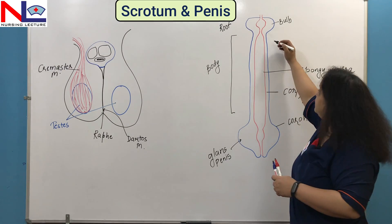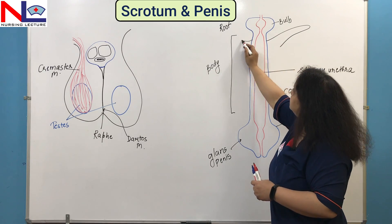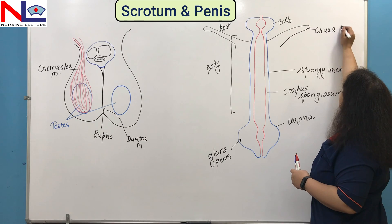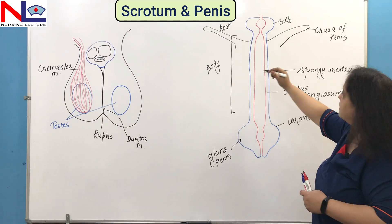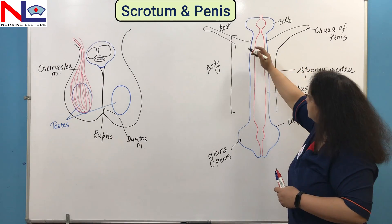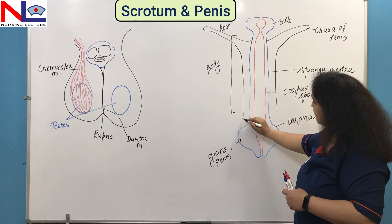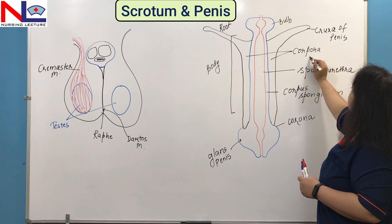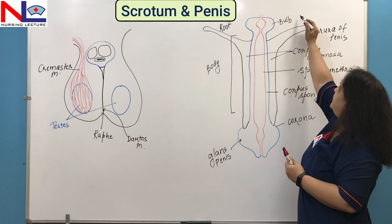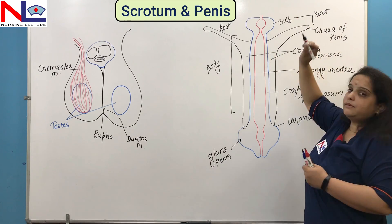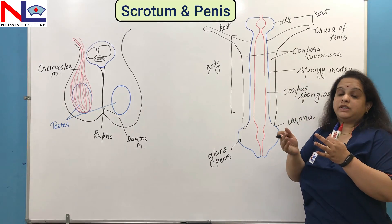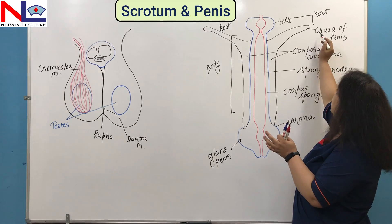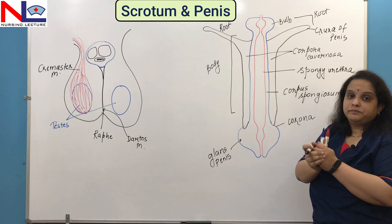The two lateral tapered ends of the two dorsolateral masses are called the crura of the penis. The two dorsolateral masses are called the corpora cavernosa. Together, the bulb and crura are called the root. The bulb is the attached portion of the corpus spongiosum, which is attached to the inferior part of the deep muscles of the perineum and is also surrounded by the bulbospongiosus muscle. The crura of the penis are attached to the ischium and the inferior part of the pubic rami.